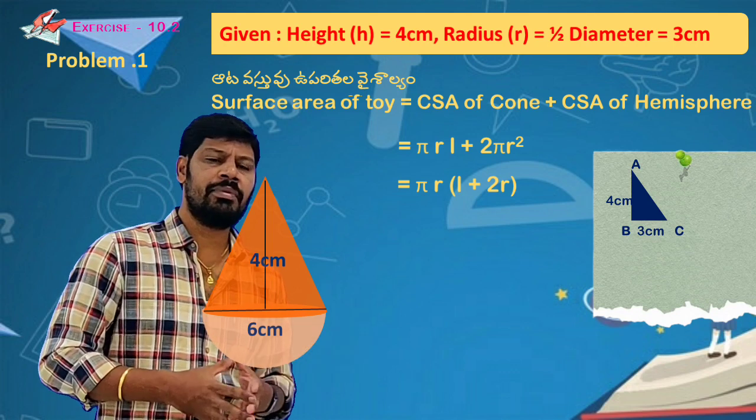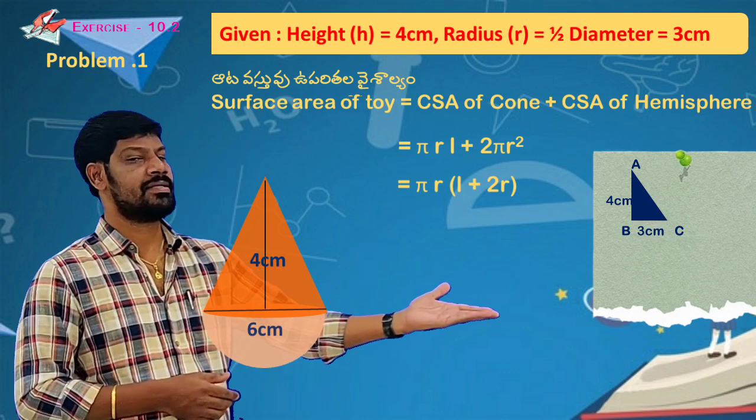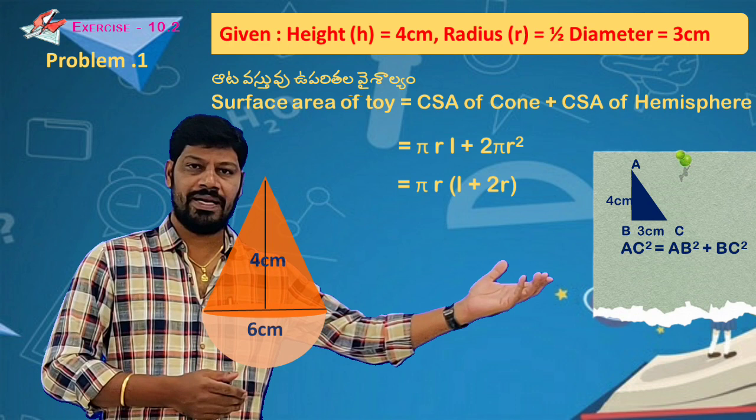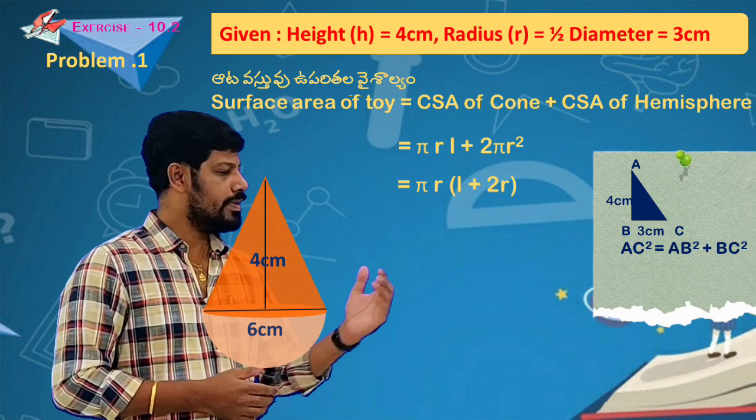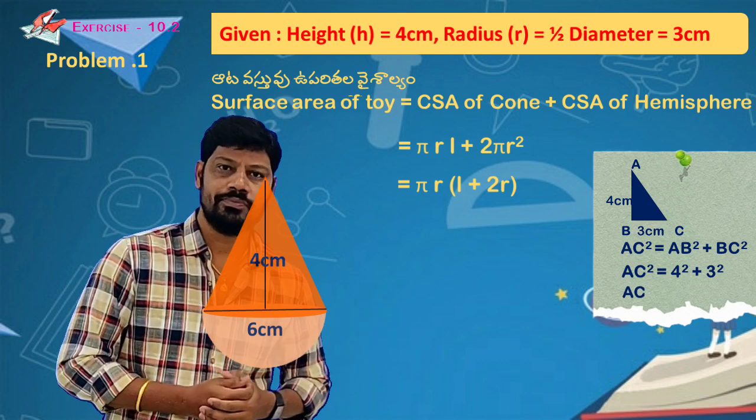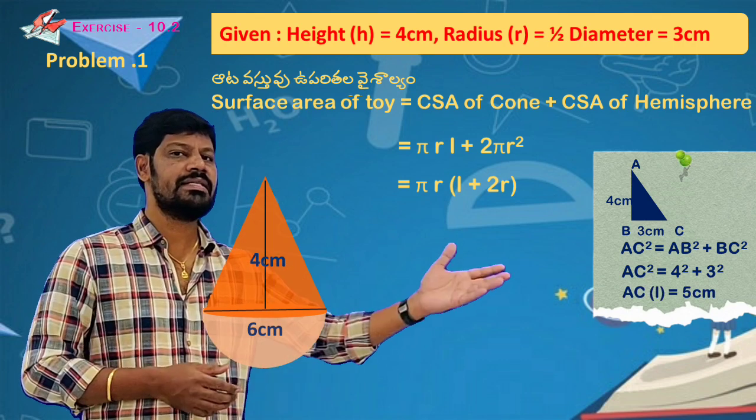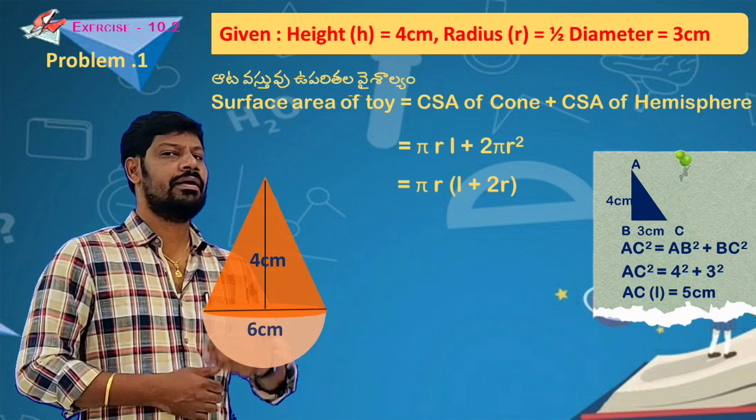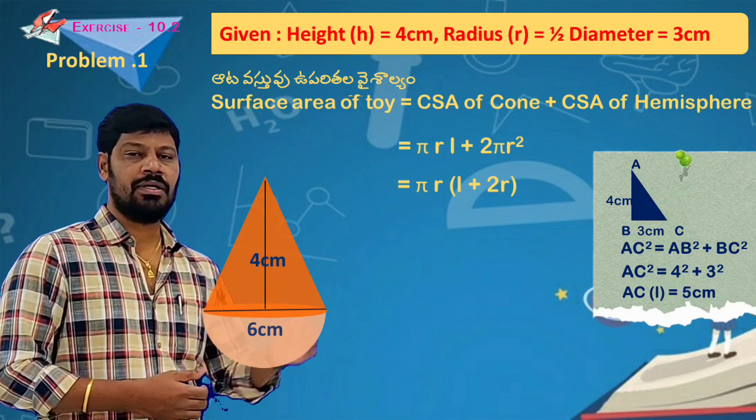If we apply Pythagoras theorem, AC² = AB² + BC². We substitute and calculate, AC is equal to 5 cm. AC is the slant height. Now we will calculate the final calculation.